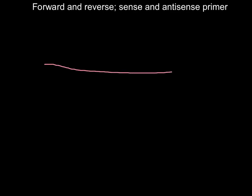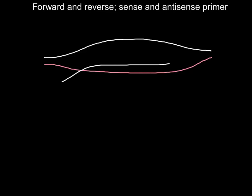Hi, today I want to talk about forward, reverse, sensing, antisense primers. I want to start with this picture of the double-stranded DNA. Here is going to be messenger RNA and here is going to be double-stranded DNA. The reason why I show messenger RNA and the top strand of the double-stranded DNA in the same color is because they share the same sequence.